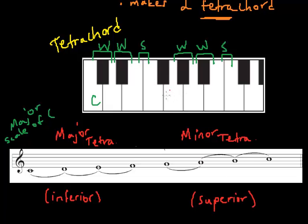And again, we can clearly see that the two major tetrachords are separated by a tone. Right? This is C, D, E, F, G, A, B, C, right? So that's the C major scale, one octave.